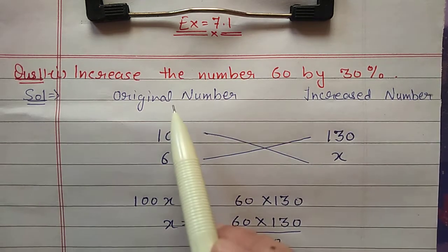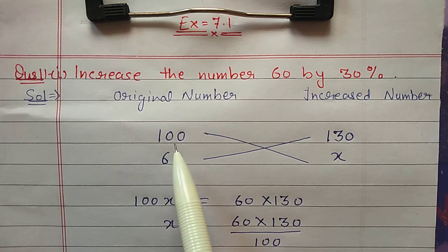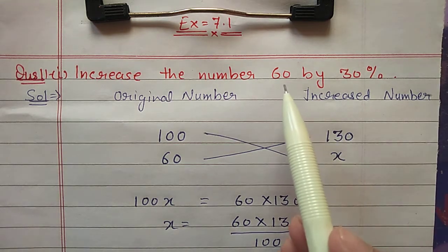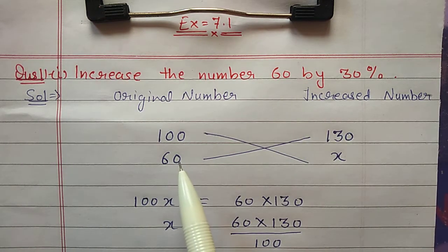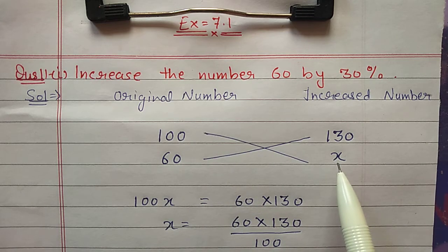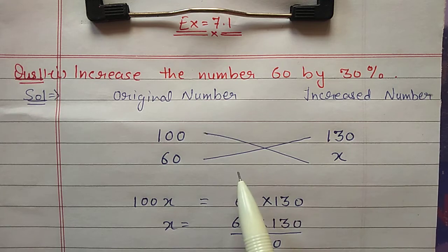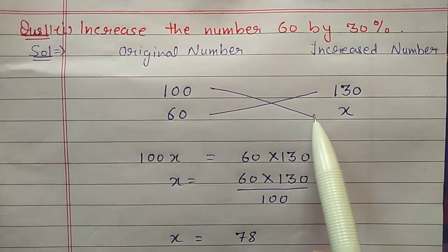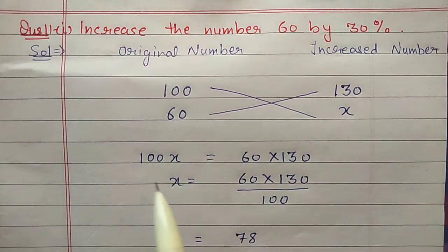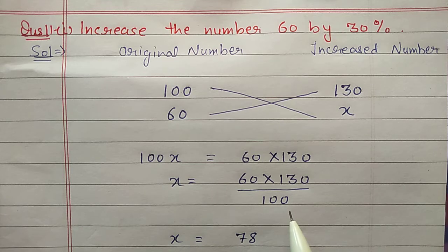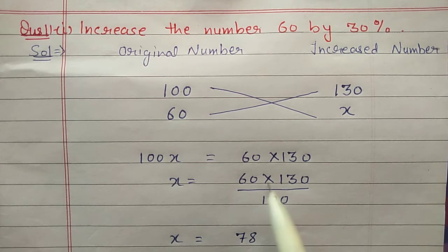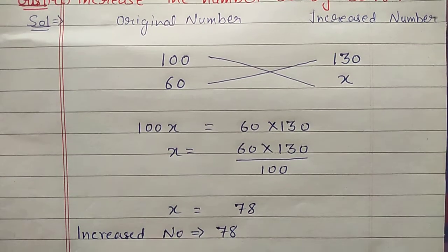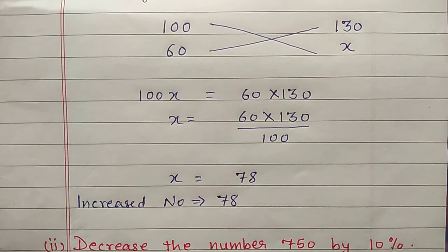Suppose the original number is 100, then after 30 percent increase it will become 130. But according to the question, the original number is 60, so after 30 percent increase suppose it will become x. After that we do the cross multiplication because it is a direct variation: 100 into x equals 60 into 130. Shift 100 to the other side for division, cancel both zeros, multiply 13 and 6 — answer x is 78. So after the increment the number will become 78.